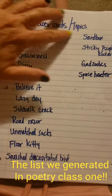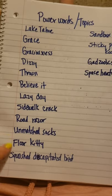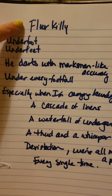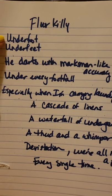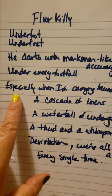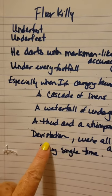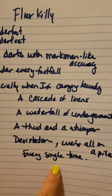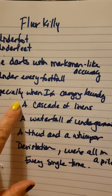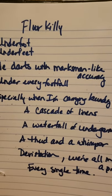If we go to our list of ideas and pick one to develop a simile or a metaphor, I'm going to pick 'Floor Kitty' for my image today. Here's my imagery poem: 'Under foot, under feet, he darts with marksman-like accuracy under every footfall, especially when I am carrying laundry. A cascade of linens, a waterfall of undergarments, a thud and a whimper, devastation. We're all in a pile every single time.' So we're comparing my tripping over the cat and throwing laundry all over the place to a waterfall, the flowing of the water as it cascades over the rocks as I cascade over my cat.